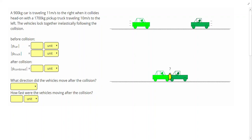Alright, in our sample problem we have a 900 kilogram car initially traveling 11 meters per second to the right when it collides head-on with a 1700 kilogram pickup truck traveling 10 meters per second to the left.